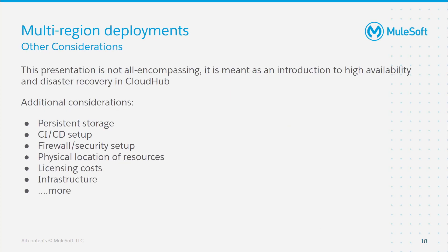Choosing to deploy applications across multiple regions in CloudHub should not be a decision taken lightly. There are many additional considerations that should be taken into account. A big factor is the use of state and how persistent storage is used in your applications. It's also important to understand how this translates to a multi-region strategy where you can't guarantee where the applications are running. You should understand the impact on your CI/CD pipeline and how applications would be deployed via that pipeline, as well as how the deployment strategy affects different firewall and security setups. Another consideration is where different resources are physically located and the latency introduced by changing regions. Finally, it's important to understand how different licensing costs differ between deployment strategies, as well as infrastructure costs like load balancers, additional VPCs, and dedicated load balancers.